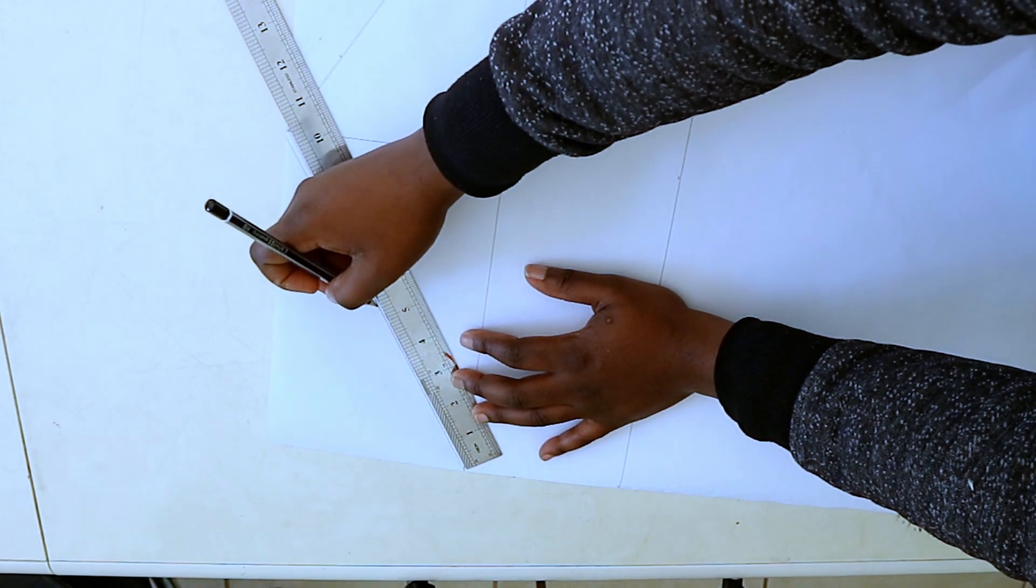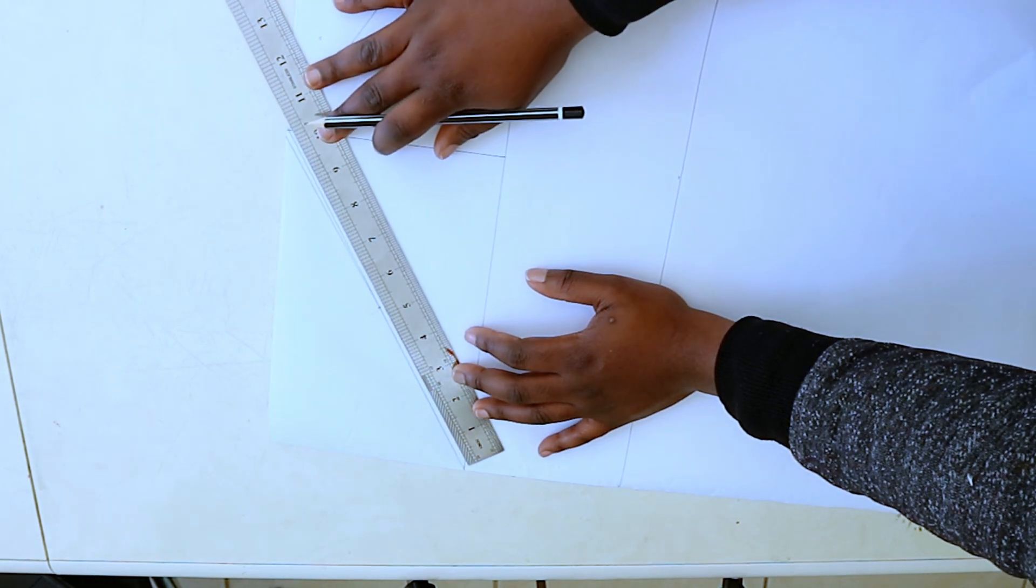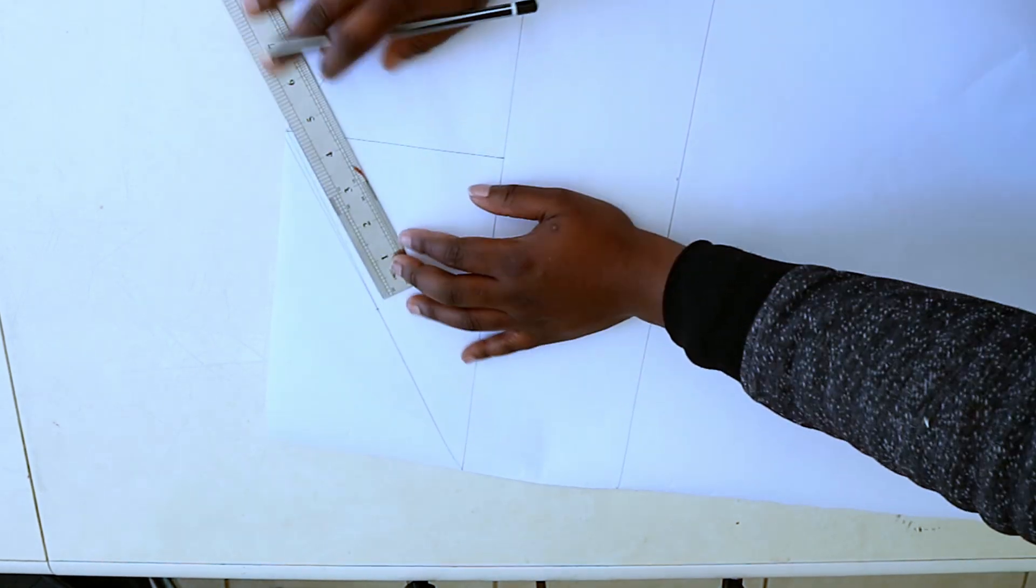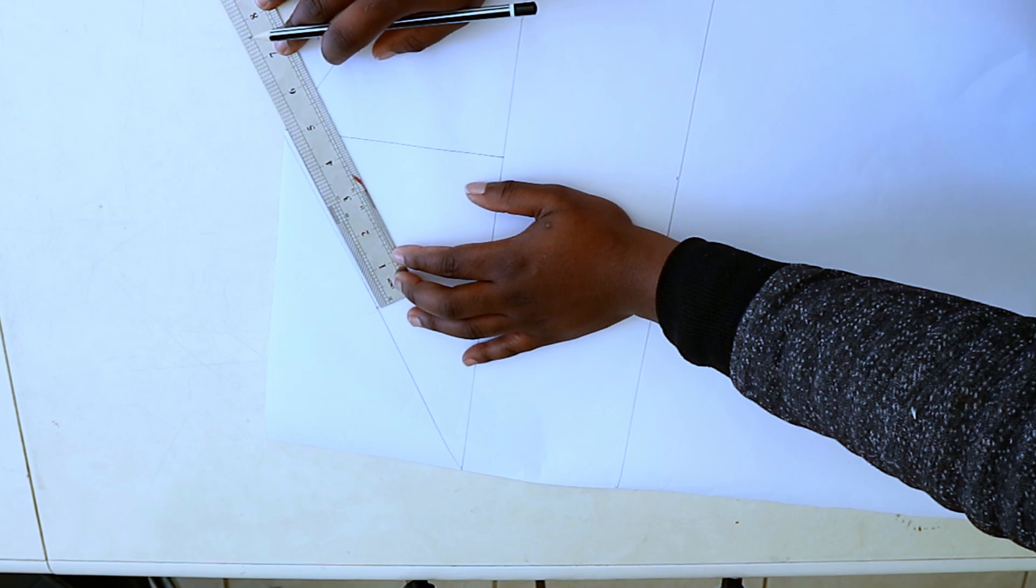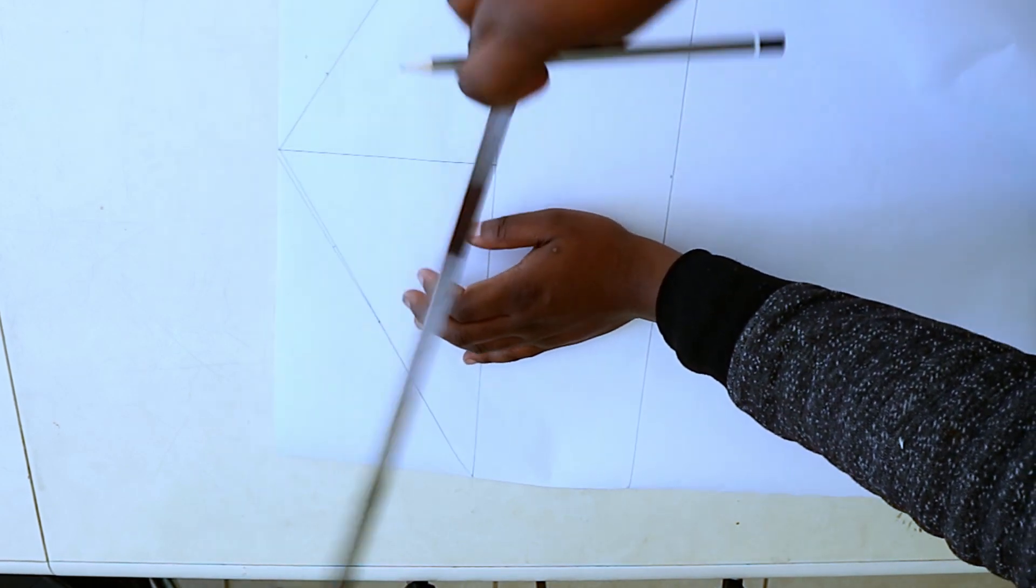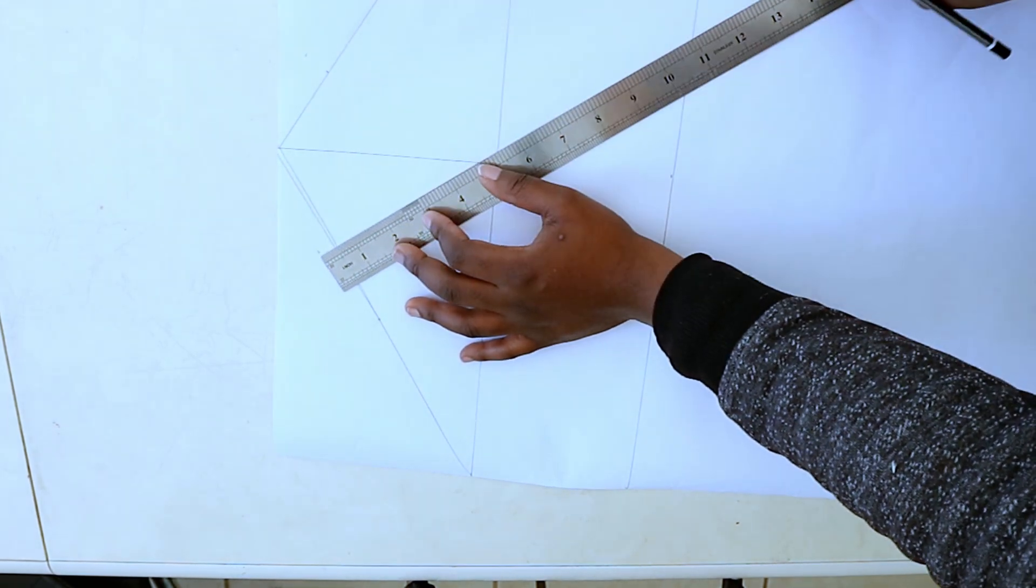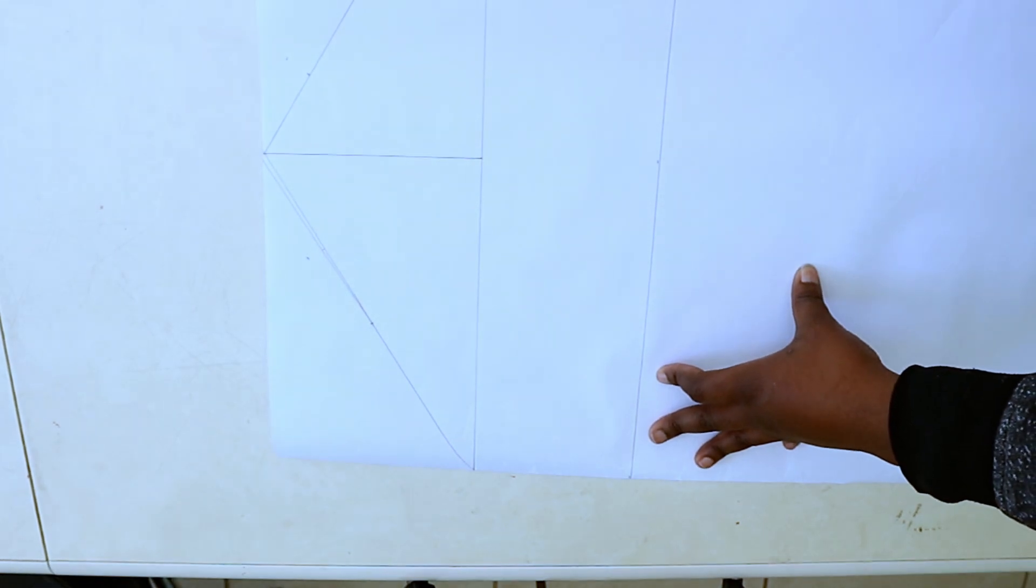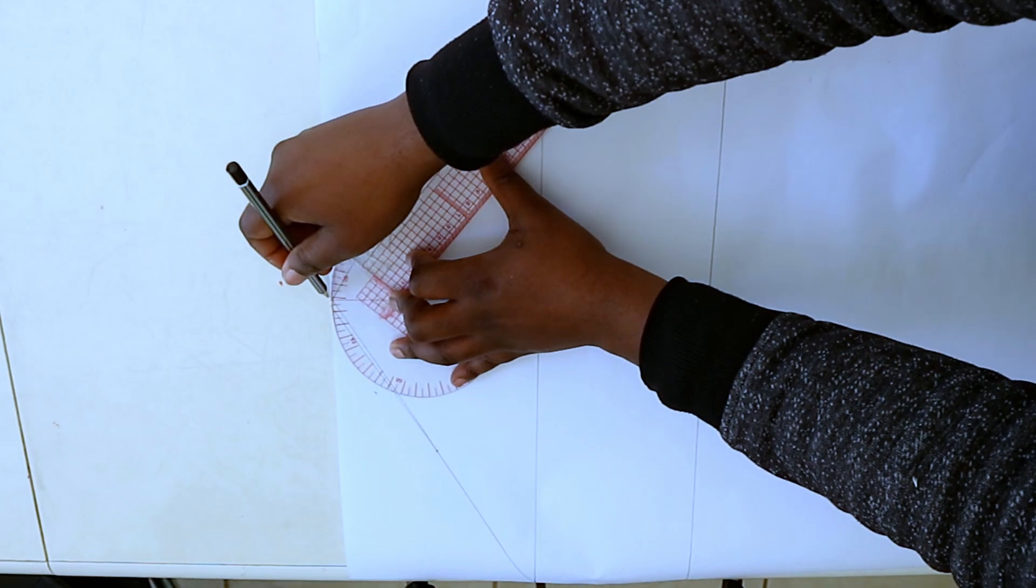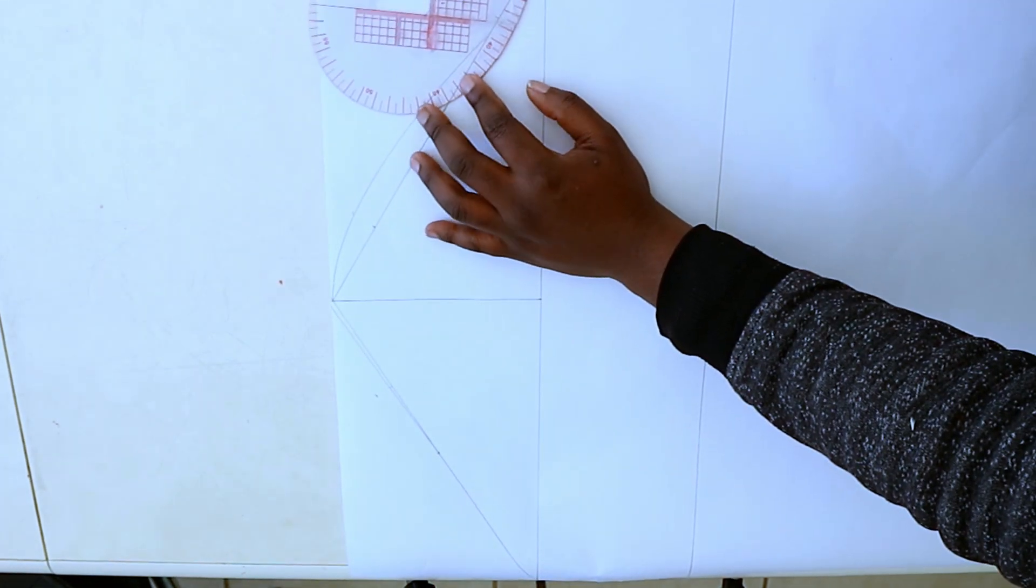On the left side, which is going to be the back armhole, do the same but raise the front mark by 1 inch and the third mark by half an inch. Draw the sleeve head by connecting all the points together with a curved ruler.